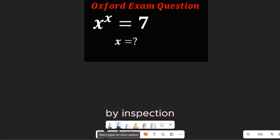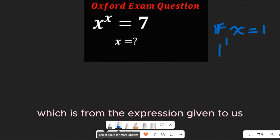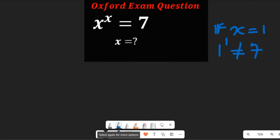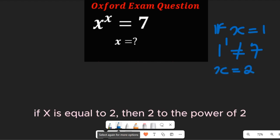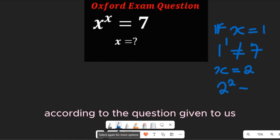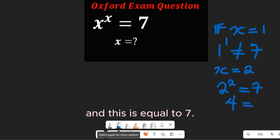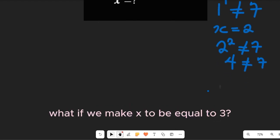By inspection, if x is equal to 1, then 1 to the power of 1 cannot be equal to 7. What if x is equal to 2? Then 2 to the power of 2 according to the equation given — but 2 to the power of 2 is equal to 4, not 7, so that cannot work either.